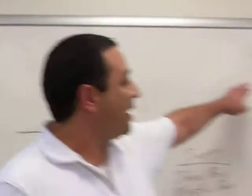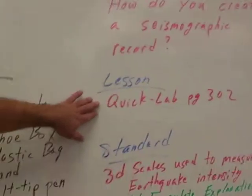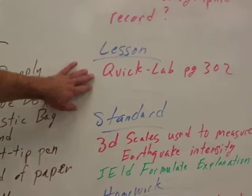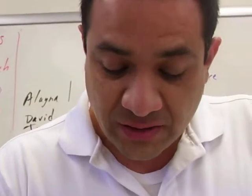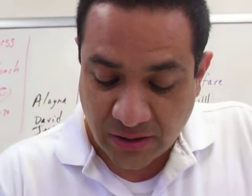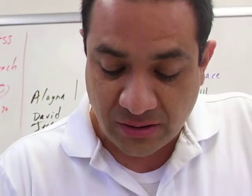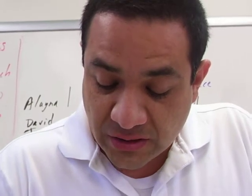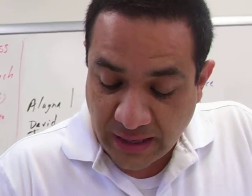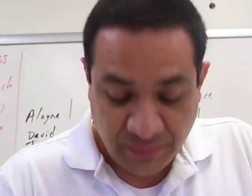The objective is: how do you create a seismographic record? It's a quick lab on page 302. The California standards are 3D — students know why and how earthquakes occur and the scale used to measure their intensity and magnitude — as well as investigation and experimentation 1D: students will formulate explanations using logic and evidence.